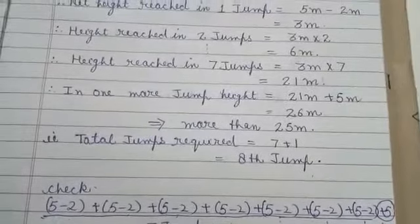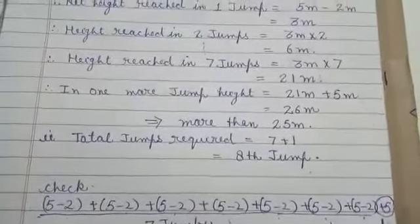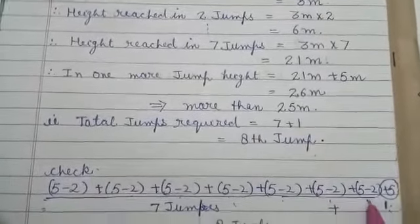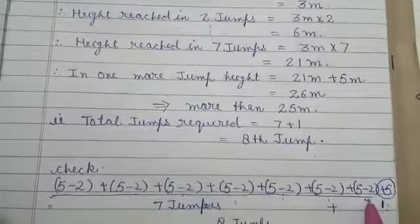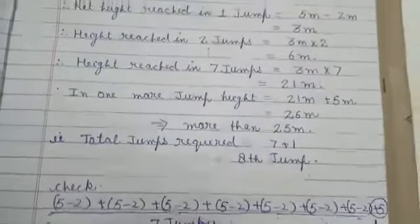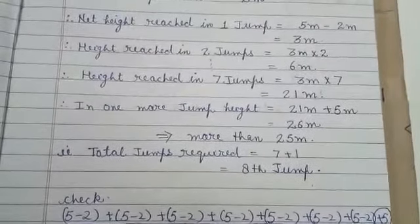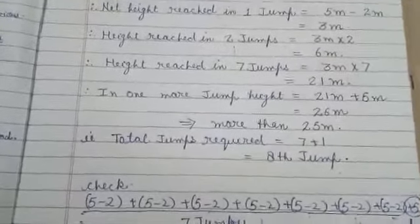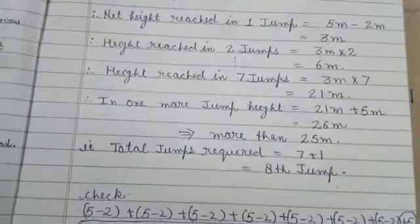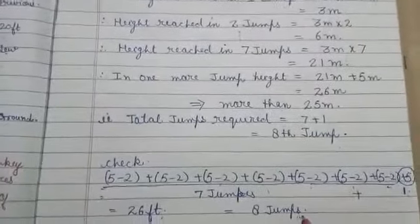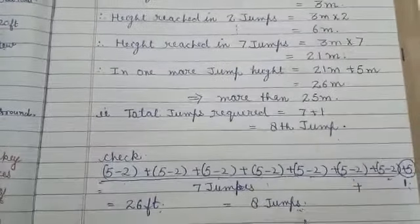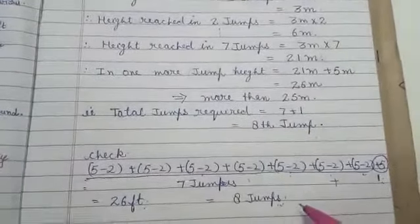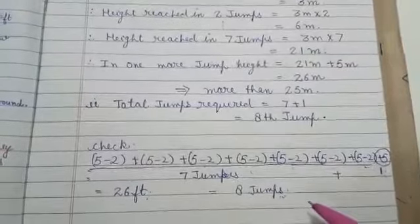So when you solve these, this is of the 7 jumps, and this is of the last jump. So when you solve this, what answer will you get? You will get the answer 26. The answer of this is 26 feet. And the pipe is only 25 feet. Clearly, after the eighth jump, he will be on the top of the pipe. Class, read the question. Understand the question very well. If you are not able to understand, if you have any confusion, you can ask me. I will tell you again.